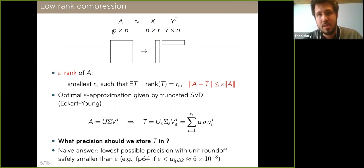Low rank compression, given a dense matrix A, consists in approximating it by a lower rank product xy transpose, where r is hopefully small. More formally, we can define the epsilon rank of a matrix as the smallest rank, such that there exists a matrix of that rank, r epsilon, such that it approximates the matrix A with relative accuracy epsilon in some norm. We know that the optimal epsilon approximation in any unitarily invariant norm is given by the truncated SVD. That is the SVD that you obtain by stopping after r epsilon singular values. This is all quite well-known material. The question that we want to ask in this talk is what precision, what floating point arithmetic, we should use to store this truncated SVD in?